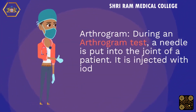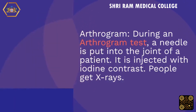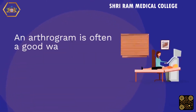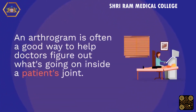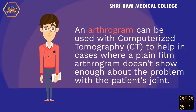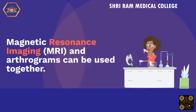Arthrogram: during an arthrogram test, a needle is put into the joint of a patient and injected with iodine contrast. X-rays are then taken. An arthrogram can help a doctor find out if a ligament is torn or if there is a problem with the cartilage. It can be used with computerized tomography (CT) or magnetic resonance imaging (MRI) to help in cases where a plain film arthrogram doesn't show enough detail.